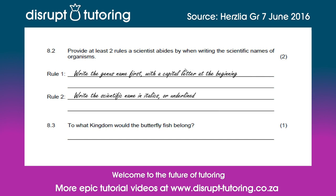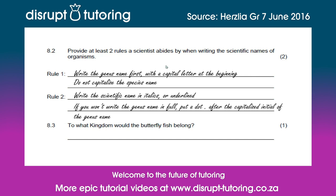Here are two bonus rules as well. A third rule is that you must not capitalize the species name — only capitalize the genus name, which you write first; the species name comes after and does not get a capital letter. Finally, if you're not going to write the genus name in full, put a dot after the capitalized initial of the genus name. For example, you can write Chaetodon ephippium in full, or write it as C. ephippium, underlined — and that will also be correct. So those are four rules for writing scientific names of organisms.